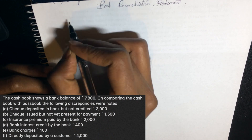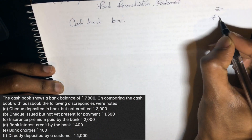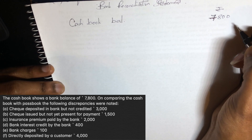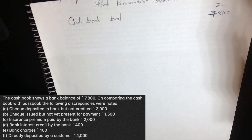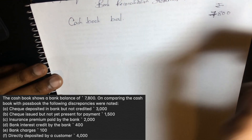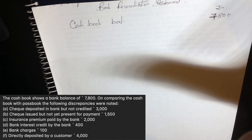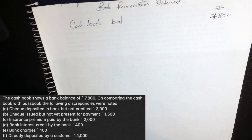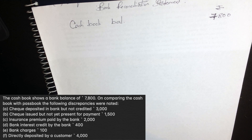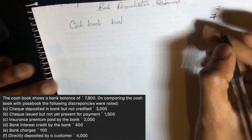Let's work through an example. The cash book balance is $7,800. First statement: 'Check deposited in bank but not credited.' If we deposited a check but the bank hasn't credited it yet, the cash book has the amount but the bank statement doesn't. So we need to deduct this — in $7,000 — from the bank side, because the bank hasn't credited it. That's why we minus this statement.